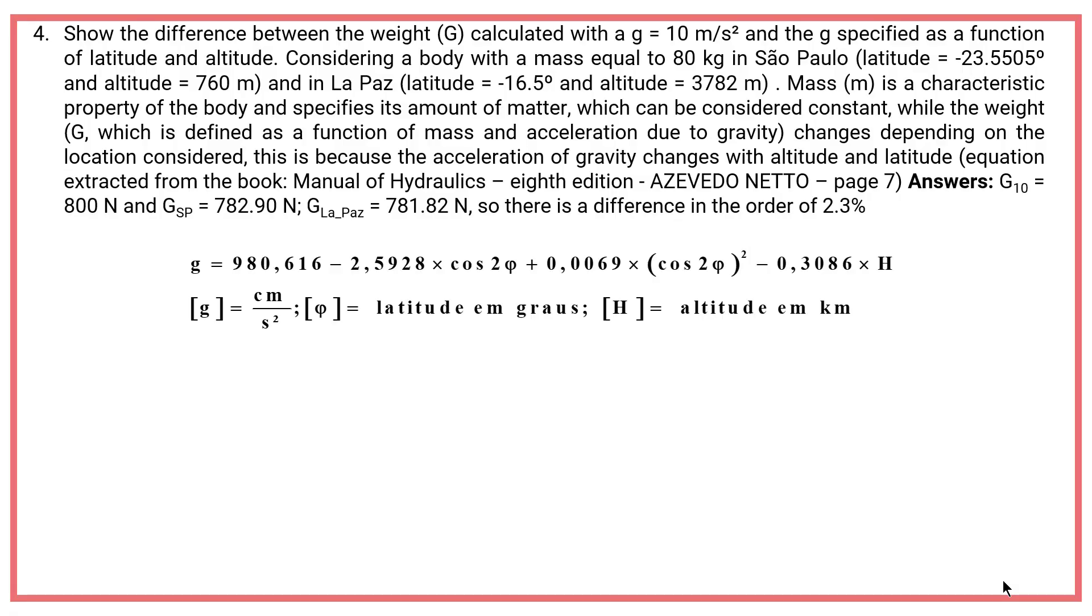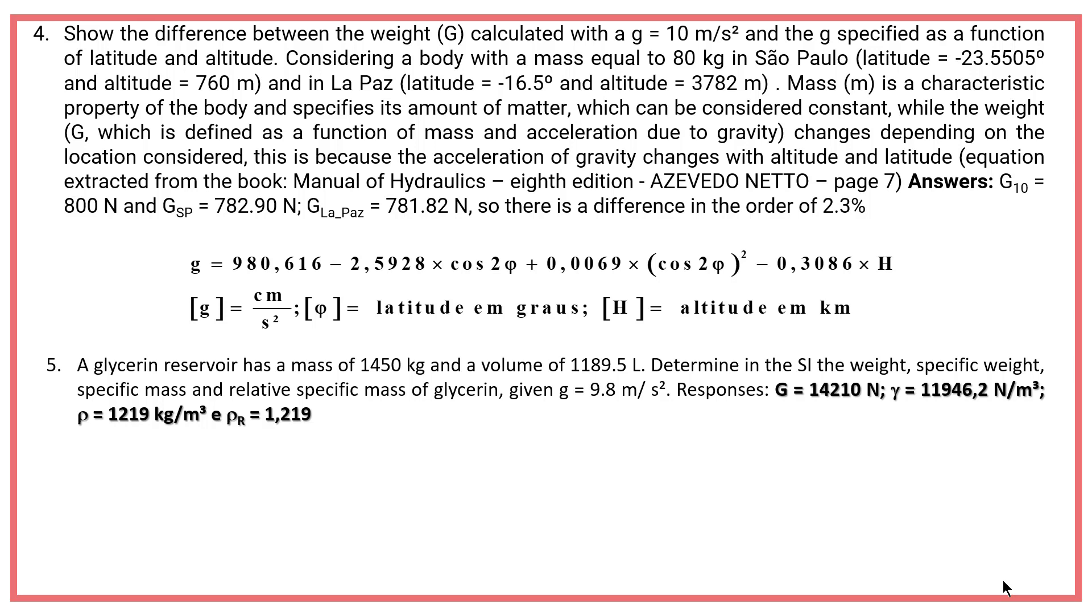Fifth, a glycerin reservoir has a mass of 1450 kilogram and a volume of 1189.5 liters. Determine in the SI the weight, specific weight, specific mass and relative specific mass of glycerin, given G equals 9.8 meters per second squared. Response.